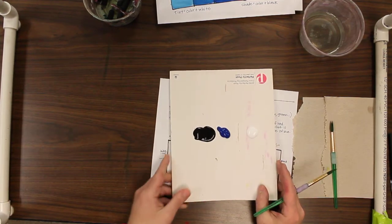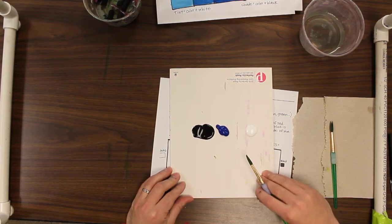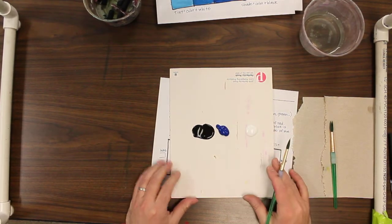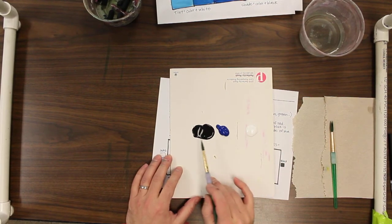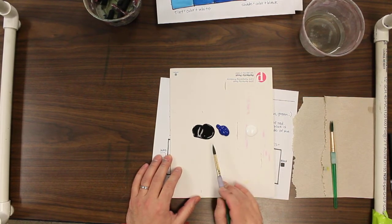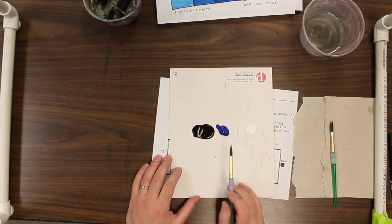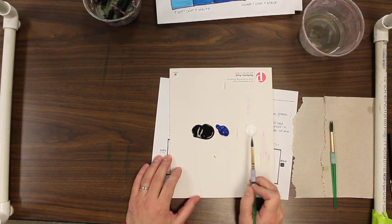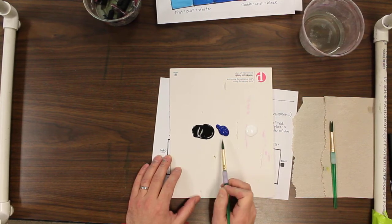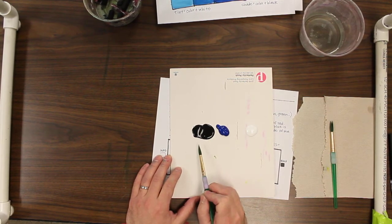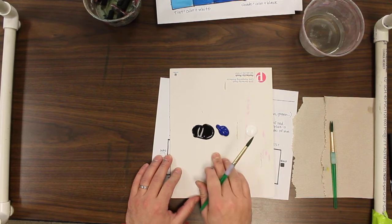You're going to be using a magazine today. This is kind of nice because then at the end we can just rip off the page and throw it away. As you can see, I have blue, and then I have black and white over here. We're going to make different tints, which are a lighter version of blue, and then a shade is when you add black and the darker version of blue, or it could be another color too.